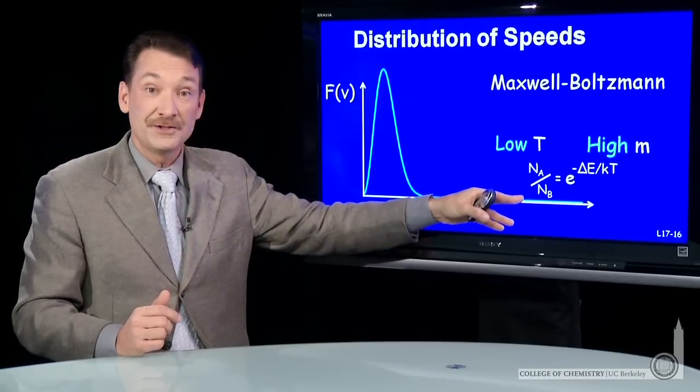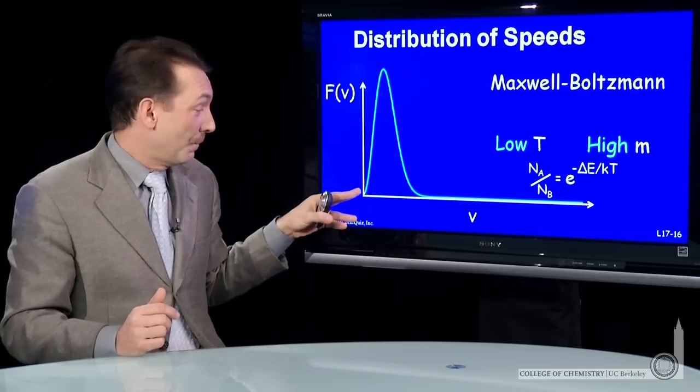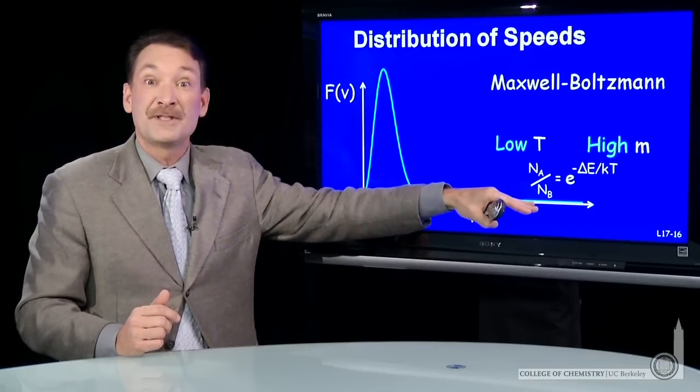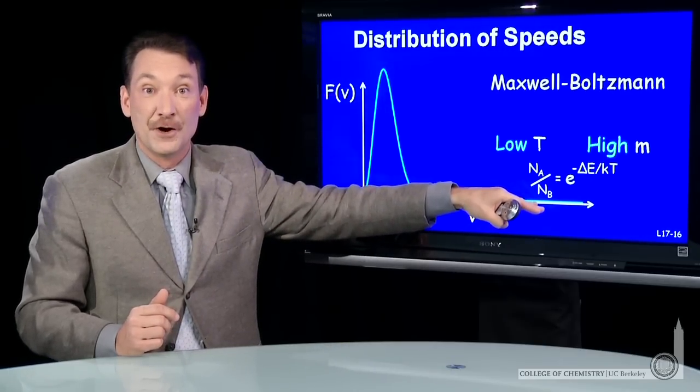High molar mass or low temperature would mean relatively low velocities and lots of particles with these low velocities. Still some particles with very high velocities and some particles with very low velocities. These curves asymptotically approach zero velocity.